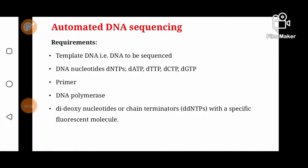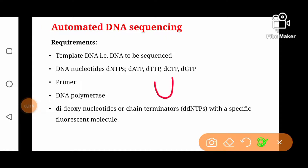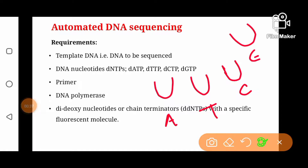All these components are put into four reaction tubes, each with a different chain terminator molecule. Tube 1 contains dideoxy adenine nucleotide, tube 2 contains dideoxy thymine nucleotide, tube 3 contains dideoxy cytosine, and tube 4 contains dideoxy guanine nucleotide as the chain terminator. All components except the chain terminator are common across the four reaction tubes.